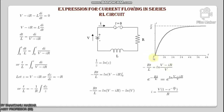Consider a circuit in which resistance R is connected in series with an inductor L and a voltage source V is applied across it. Initially the switch is open. At time t we close the switch and the current I starts flowing in the circuit, but it does not attain its maximum value rapidly due to the presence of the inductor, which has the property to oppose the change in current flowing through it. Applying Kirchhoff's voltage law: V − IR − L·di/dt = 0.